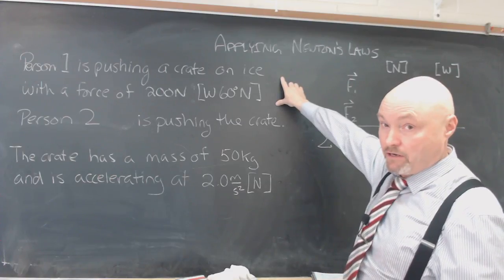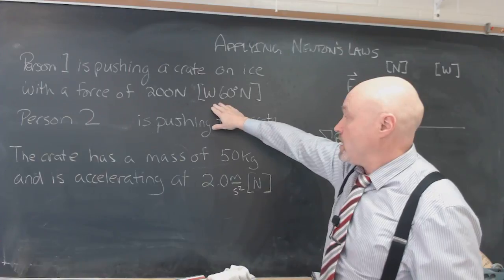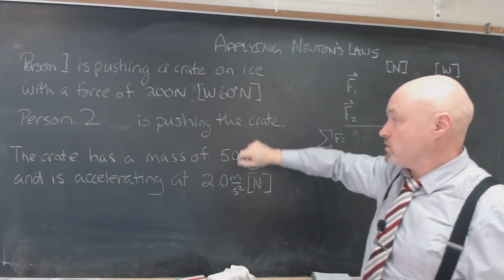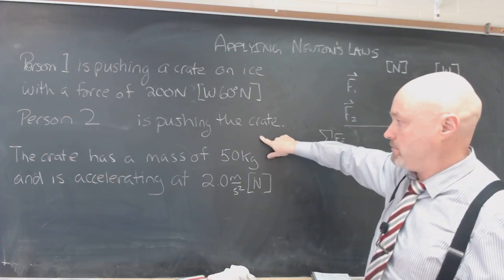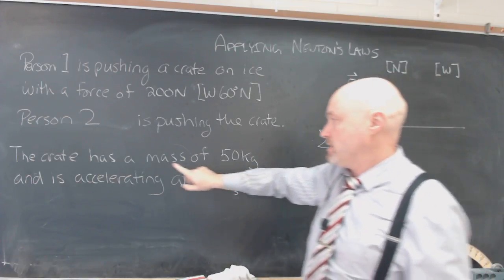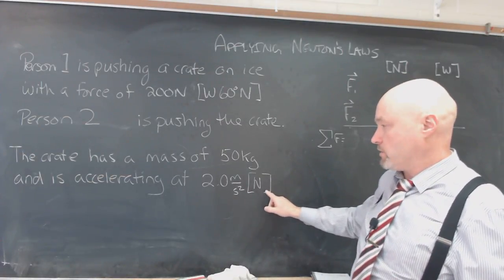Person one, this is all happening on ice, so friction is nothing. Pushing with 200 Newtons west, 60 degrees to the north. Person two is also pushing the crate, but we're not told how much or what direction. Crate has a mass of 50 kilograms and it's accelerating at 2 meters per second squared north.